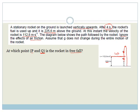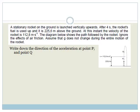Now let's look at the next question: write down the direction of acceleration at point P and point Q. At point P, the rocket's engines are still working and it is traveling upwards. Then at the horizontal line, the fuel is used up, and from that point all the way through, the rocket is in free fall. When in free fall, the only force acting on it is the force of gravity. The acceleration direction at point P has to be upwards, because we have the force of the engines pushing it up, and it is speeding up from zero velocity to 112.8 meters per second.